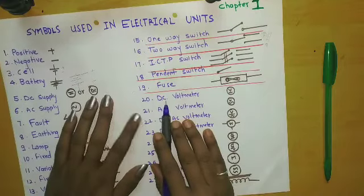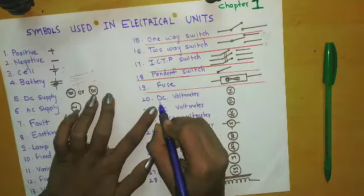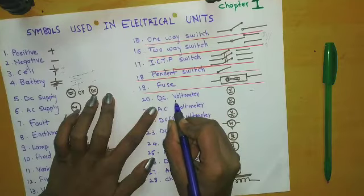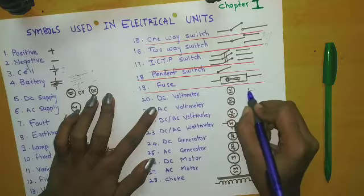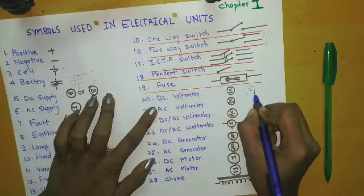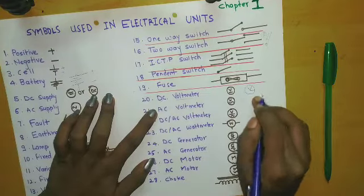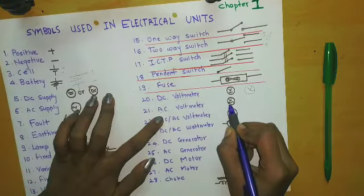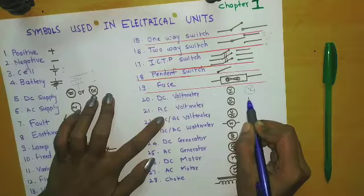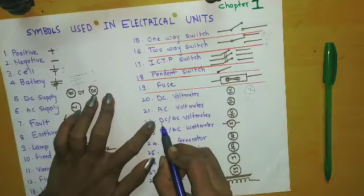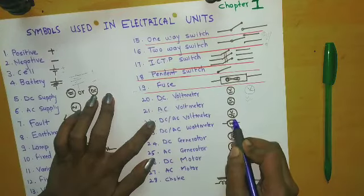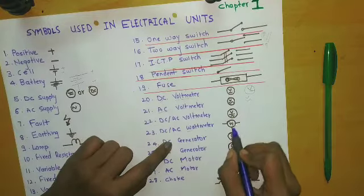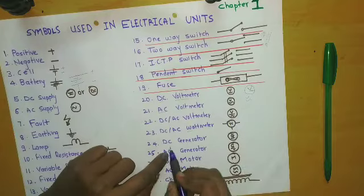DC voltmeter — when the term DC comes we draw a straight line, and since it is a voltmeter we write V. This is our DC voltmeter symbol. Similarly, for AC voltmeter we use the sine wave sign, then voltmeter. DC-AC voltmeter includes both. DC-AC wattmeter — for the wattmeter we write W, and this is the symbol of the wattmeter.